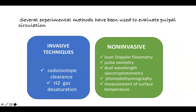Several experimental methods have been used to evaluate the pulp circulation. Radio isotope clearance and hydrogen gas saturation are invasive techniques and hence cannot be used. Laser Doppler flowmetry, pulse oximetry, dual wavelength spectrophotometry, photoplethysmography, and measurement of surface temperature are non-invasive methods to measure pulp vitality.